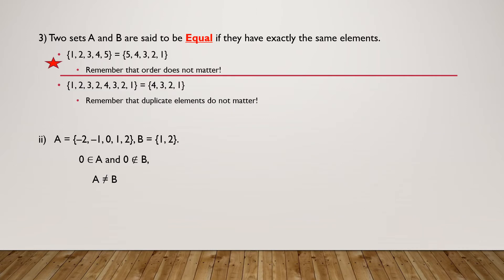Next, two sets are equal if they have exactly the same elements. Here we have to note down two things: one is order and one is duplicacy. Order will not change the equality and duplicacy of elements will also not change things. For example, if we write a set like {1, 2, 3, 4, 5} or {5, 4, 3, 2, 1}, then these two sets are equal.